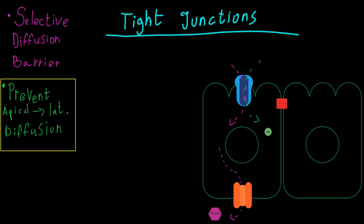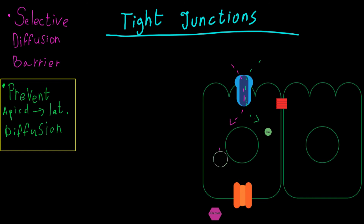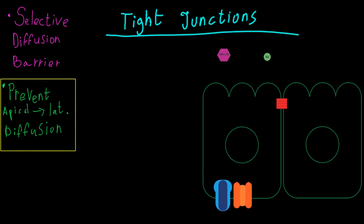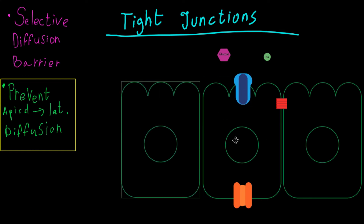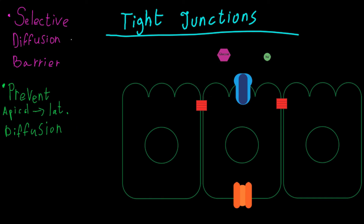For this glucose uptake mechanism to work properly, it is very important that the symport is located on the apical side and the uniport is located on the basal or lateral side. However, some proteins in the cell membrane can diffuse from side to side — for example, from the apical side to the lateral side. To keep the transporters in place, we need a barrier that prevents the symport from diffusing to the wrong side and vice versa. Luckily, this barrier exists and it is the tight junction.